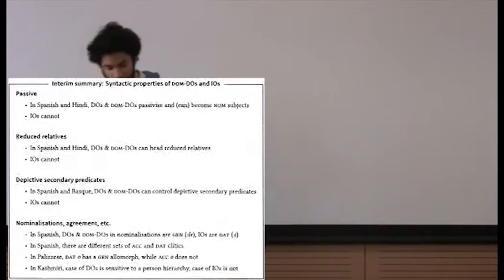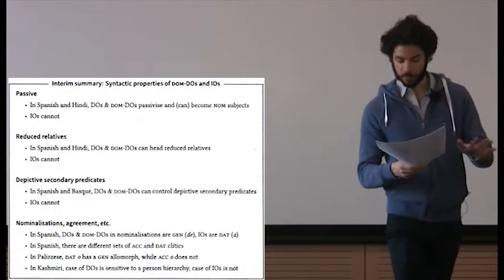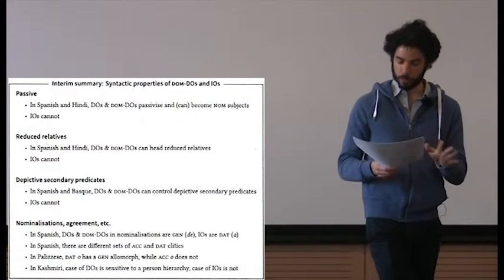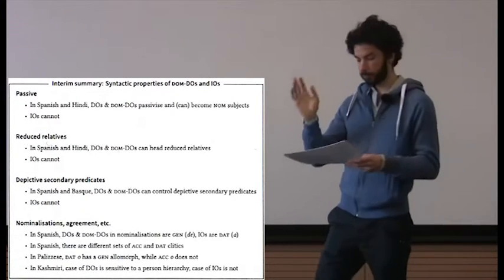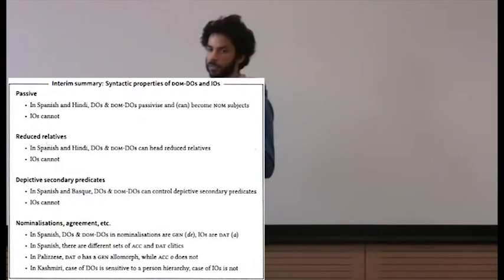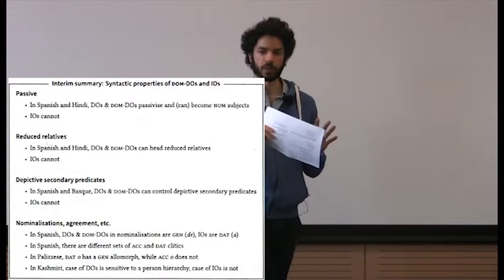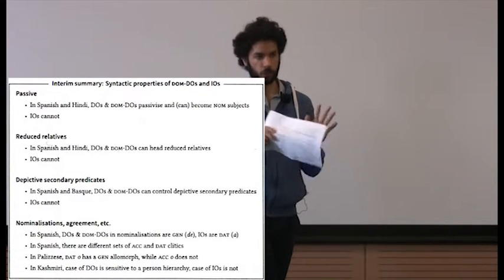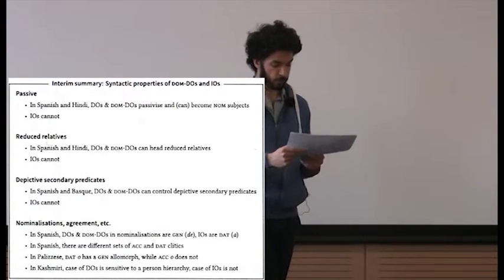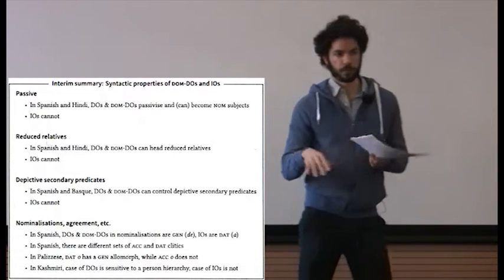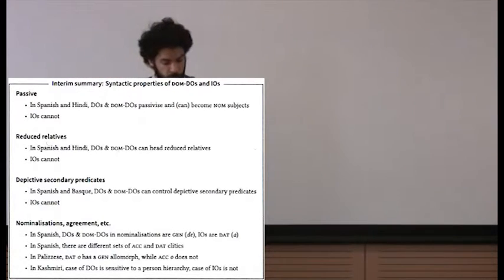That was a lot of data. Basically, looking at passives in Spanish and Hindi, reduced relatives in Spanish and Hindi, depictive secondary predicates in Spanish and Basque, nominalizations, and other patterns — these converge on one point: direct objects, whether or not they trigger differential marking, behave as a natural class with respect to these constructions, whereas indirect objects always pattern differently. I think these data are fairly clear for these languages.